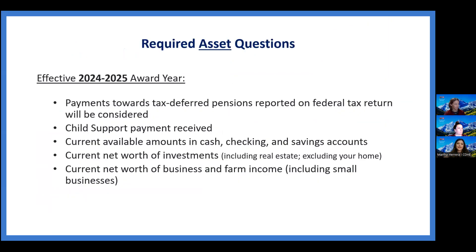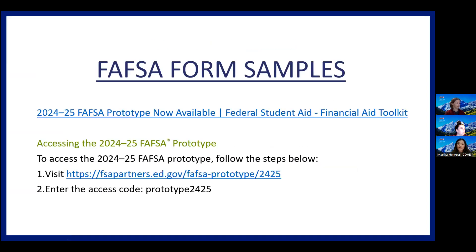Other required changes include asset questions. The net value of businesses and farms of any size will be counted as assets. Also, current available amounts in cash, checking, and savings; child support payment received; and payments towards tax-deferred pensions reported on the federal tax return will be considered as well.